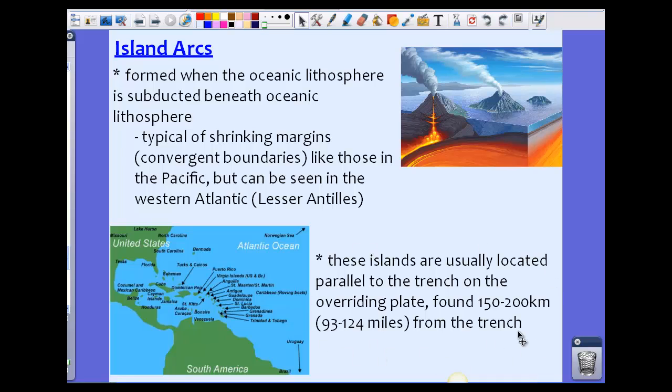These islands are usually located parallel to the trench on an overriding plate. For example, if you look at this picture, this is the plate that's overriding the one being subducted, so that's where we'll see those islands. They're usually found about 150 to 200 kilometers from the trench, which is about 93 to 124 miles. Looking at the Lesser Antilles going northwest, we can probably guess that the fault line or boundary between the two plates also runs northwest in that direction.